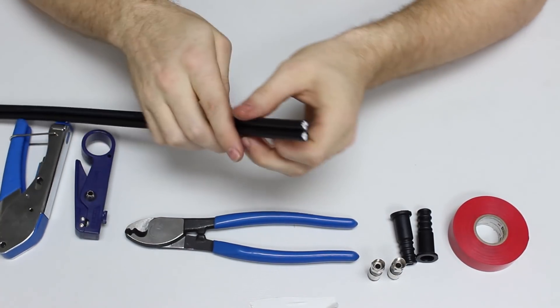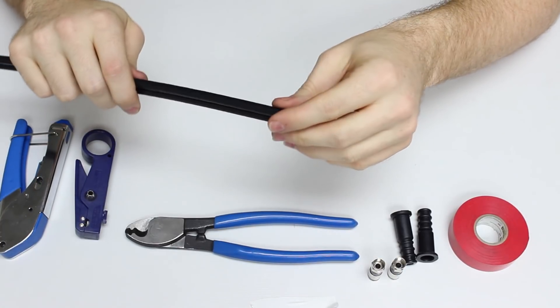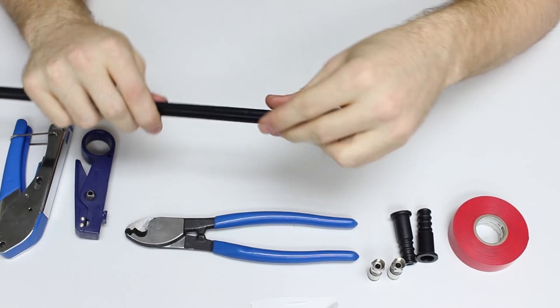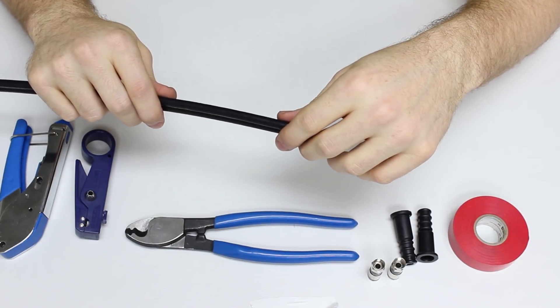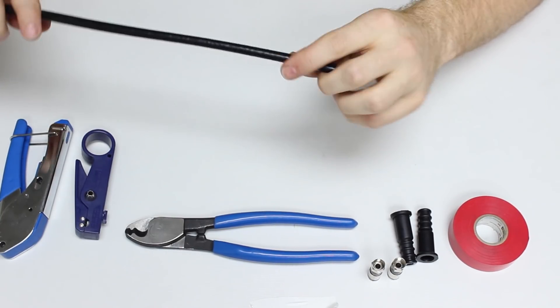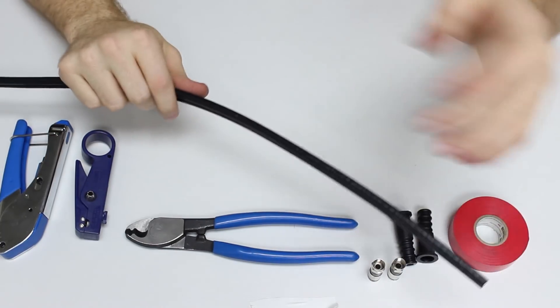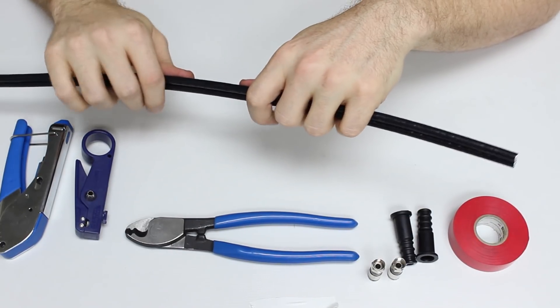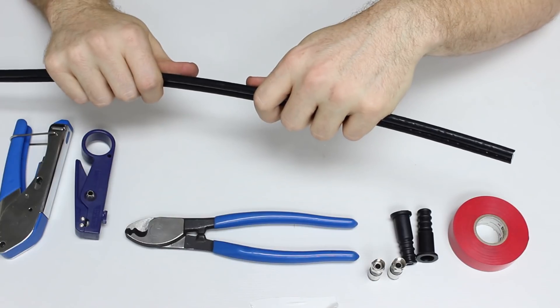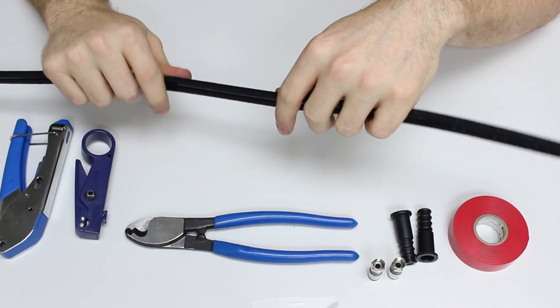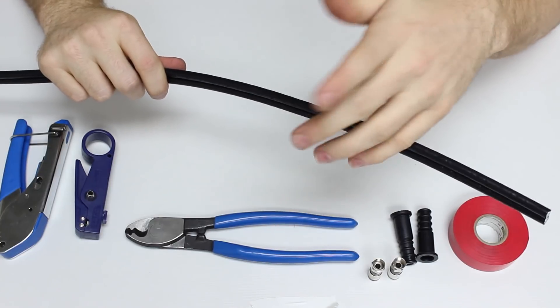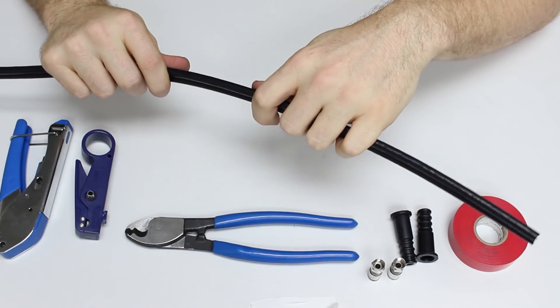Alright, we're going to go ahead and properly terminate our quad shield coax for indoor and outdoor use on our VSAT systems whether it is a current SAS system or the AVL system. One thing I would like to note is that on all terminations for our satellite systems they need to be a 100 foot section of coax. If it is a few feet shy or a few feet more that is okay but 100 foot is the preferred amount.